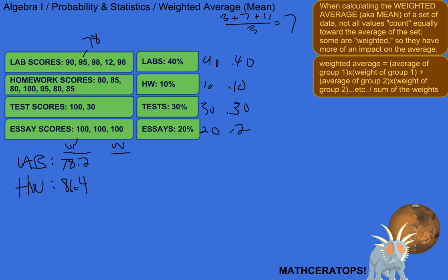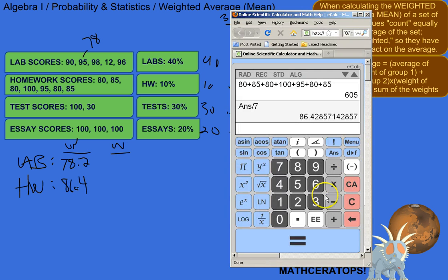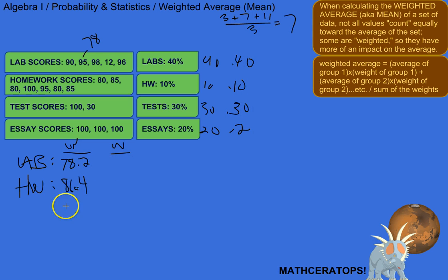Test scores. Let's get the unweighted average there, so 100, plus 30, divided by 2, is 65. Test scores didn't go so high, huh? 65.